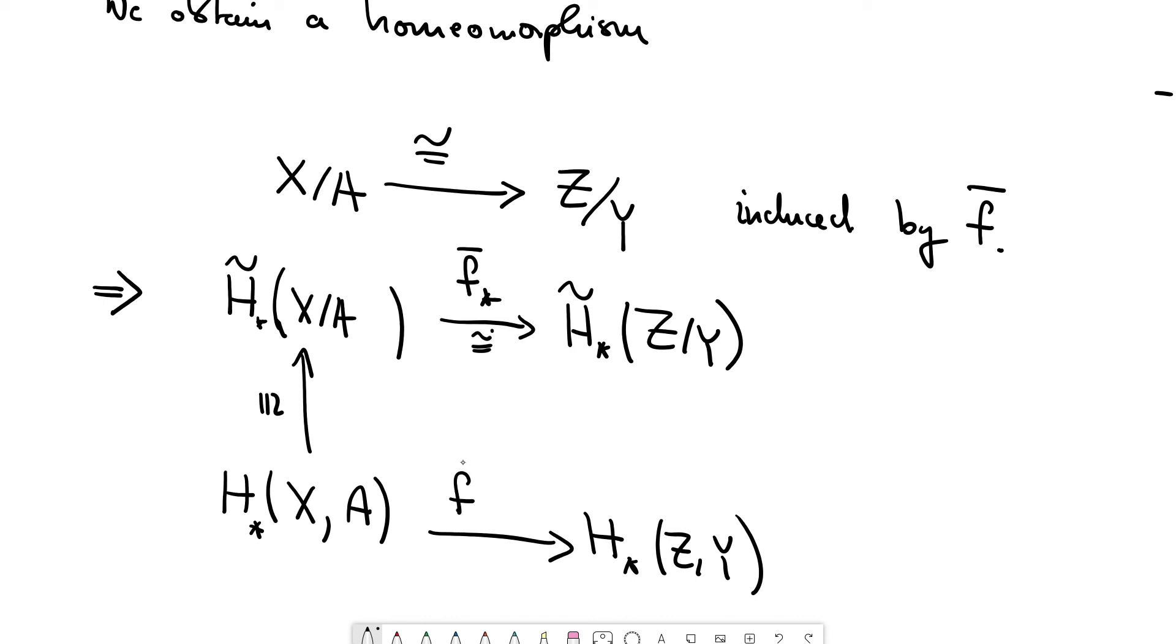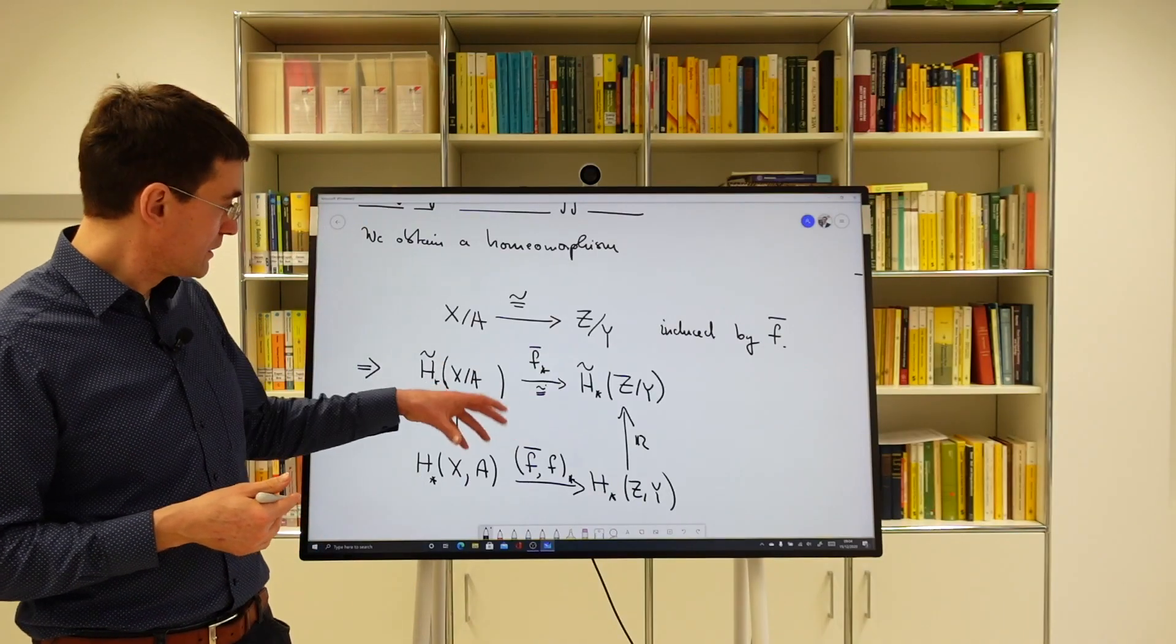And this is this map. I might also just write F bar star. And this isomorphism, the vertical isomorphism, was induced by the collapse map. So this whole thing commutes.